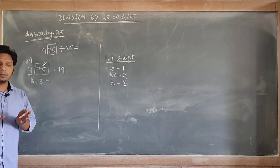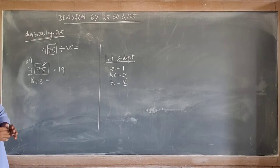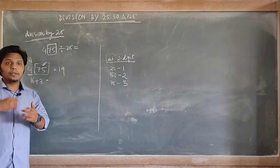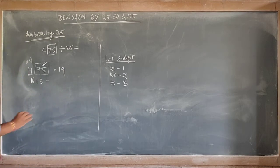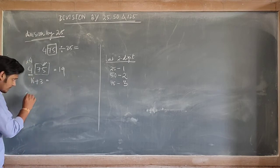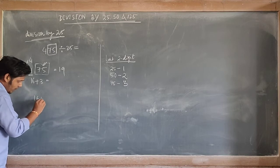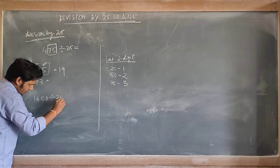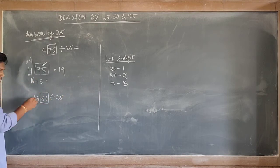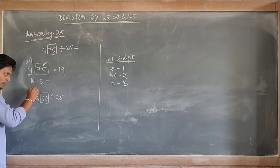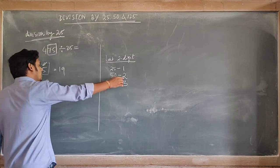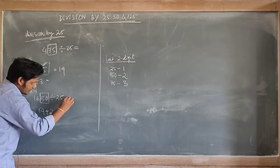Basically what you have to do is divide the number into two parts — always keep the last two digits as 25, 50, or 75. Now take 1650 divided by 25. Separate the last two digits: 50. We are left with 16, multiply by 4 to get 64. The last two digits are 50, so add 2. Your answer is 66.